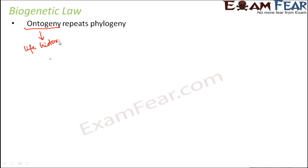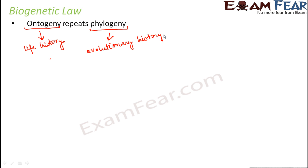Now, what is phylogeny? Phylogeny talks about the evolutionary history of the race of an organism — how that particular organism evolved. So there is a difference between the two. Ontogeny is the life history of one particular organism: the stages it goes through while living. Phylogeny doesn't talk about one individual organism; it talks about a group of organisms, how those organisms were formed, who were their ancestors, and so on. So the entire evolutionary history is phylogeny.